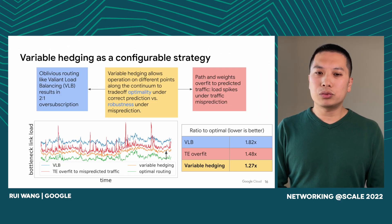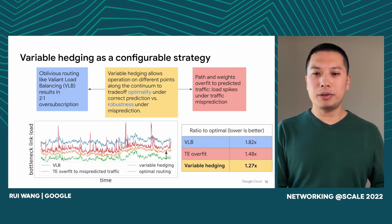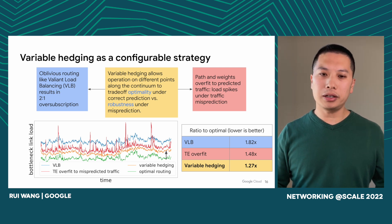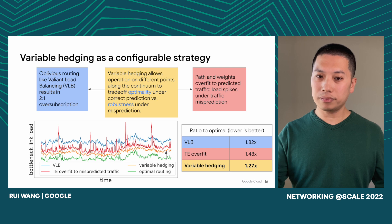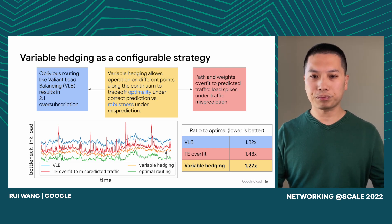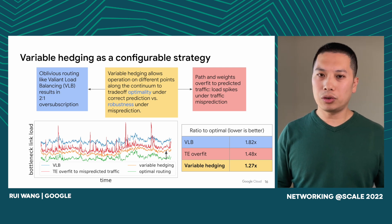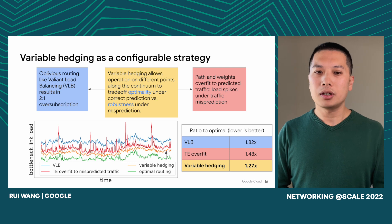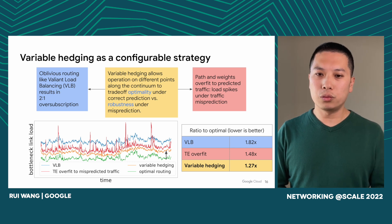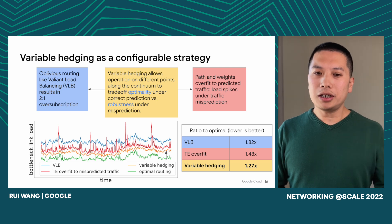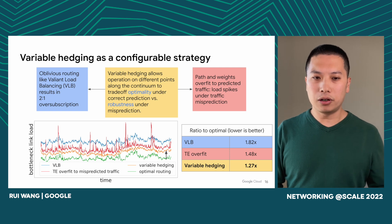What we need is a configurable scheme to sweep the entire solution continuum — balancing optimality under correct prediction versus robustness under misprediction. What we came up with was what we called variable hedging, shown as the orange waveform in the picture. It simultaneously achieves better performance on average while eliminating all the spikes from the overfit.